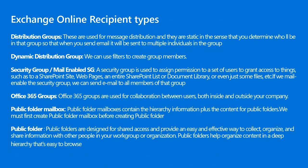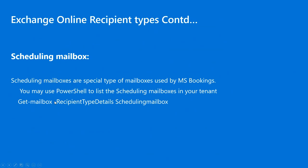Office 365 Groups are used for collaboration between users inside and outside our organization. Security groups are used to assign permissions to a set of users to grant access to things like a SharePoint site, list, document, or files. If we mail-enable a security group, we can send email to all members of that group. Scheduling mailboxes are used for Microsoft Bookings, and are a special type of mailbox. The cmdlet to look at is New-Mailbox with the -Scheduling switch.